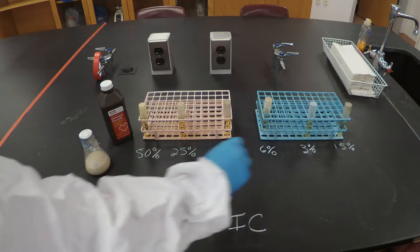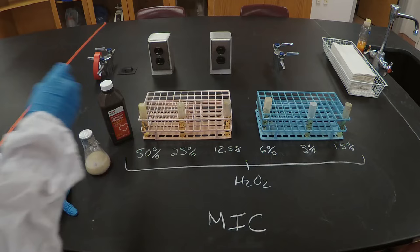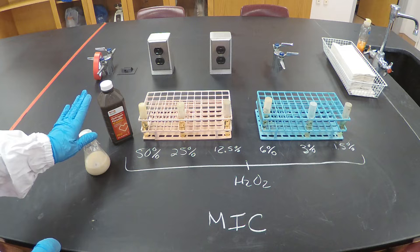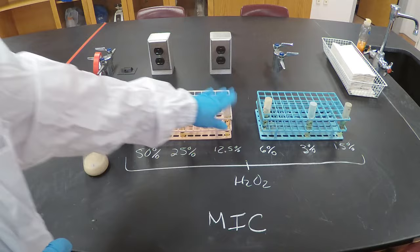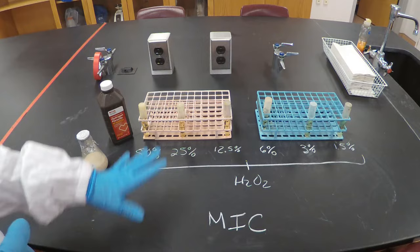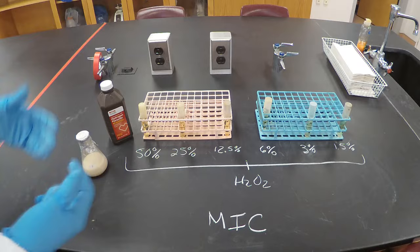All six tubes have hydrogen peroxide. I'm going to add the same amount of bacteria to each — 1 milliliter from this flask — to all six tubes. Once I have them all with the same bacteria, I'm going to incubate them overnight. I did that, and this is what I got.